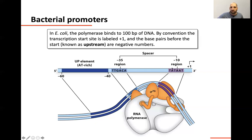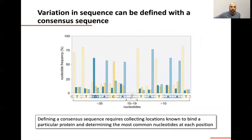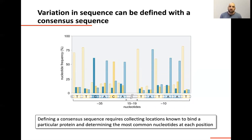The minus ten and minus thirty five regions are both important. These two regions have specific sequences. What we can do is take a list of all promoters known to bind to a particular protein, compare their sequences using a computer, and look for similarities. This is called a consensus sequence — meaning that of all the places activating transcription, this is what they have in common. The minus ten consensus is TATAAT.